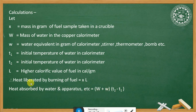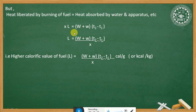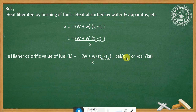Heat liberated should be equal to heat absorbed. Therefore: L = (W + w)(t2 − t1) / x. Therefore, the higher calorific value, that is gross calorific value, L = (W + w)(t2 − t1) / x, in calories per gram, or kilocalories per kilogram. In this way, we can determine the calorific value of solid and liquid materials using the bomb calorimeter. Thank you.